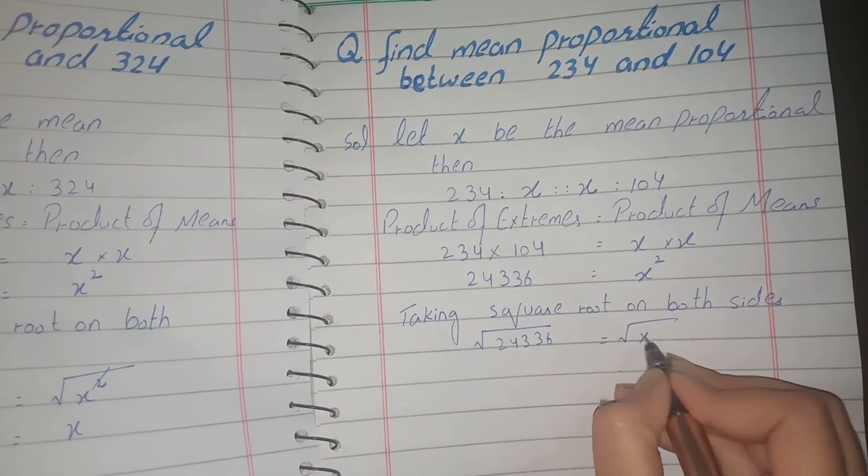Taking square root on both sides, and here we have square root. Here we have square root cancel and x, and here we have equal to this, and here we have to solve it. And let's write square root by division method.